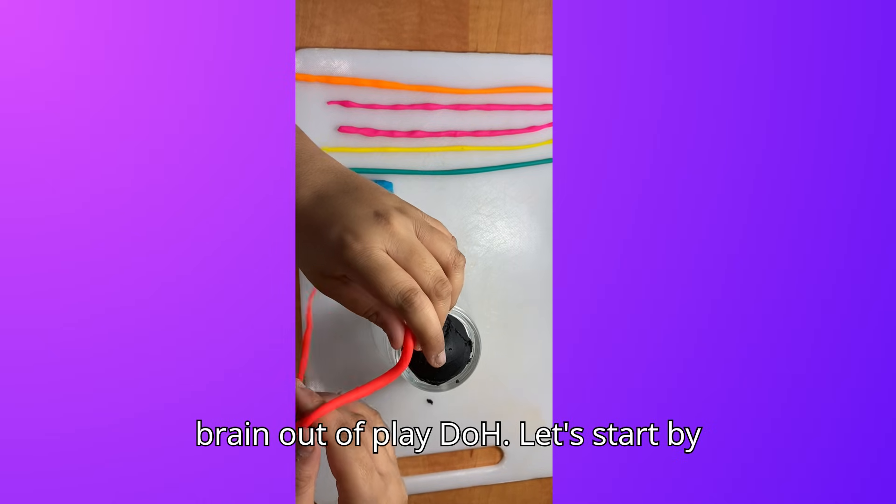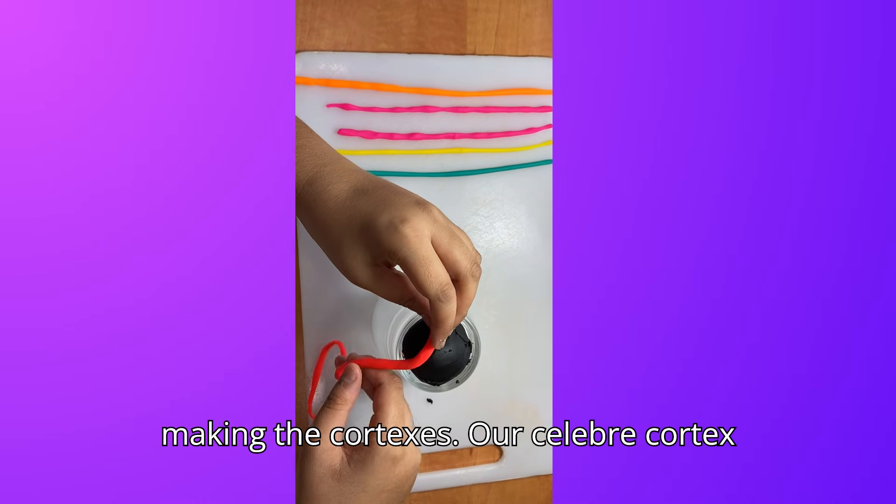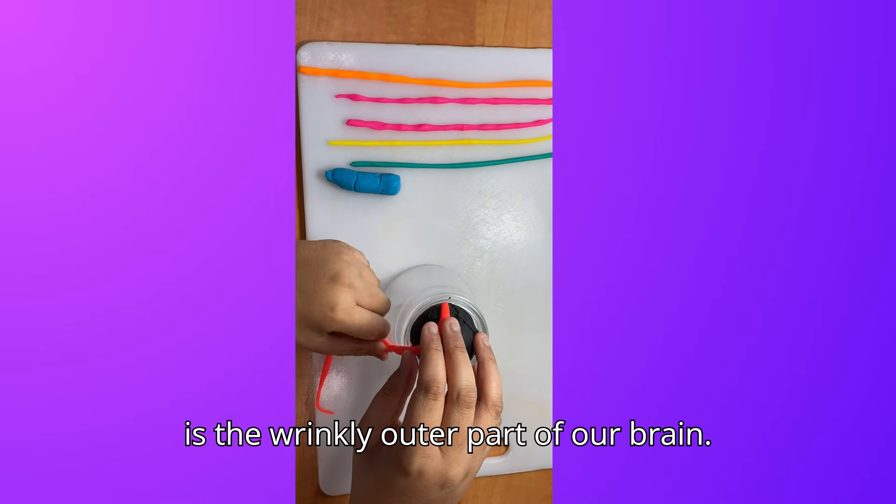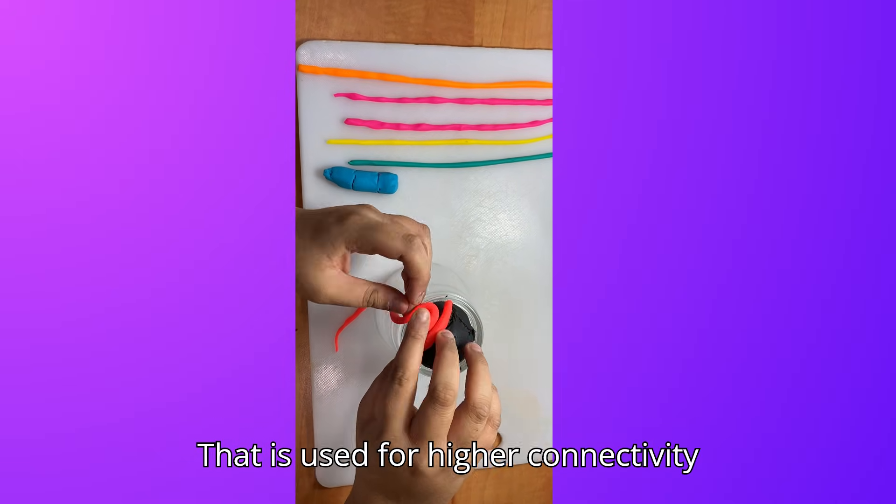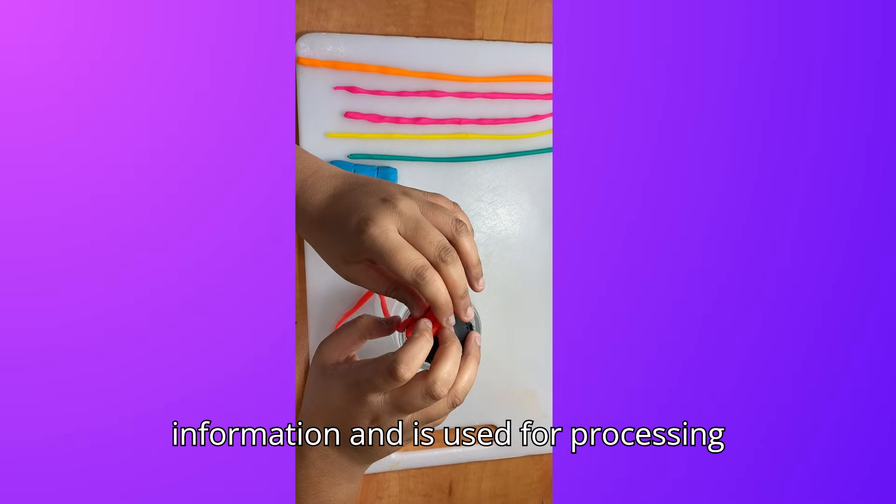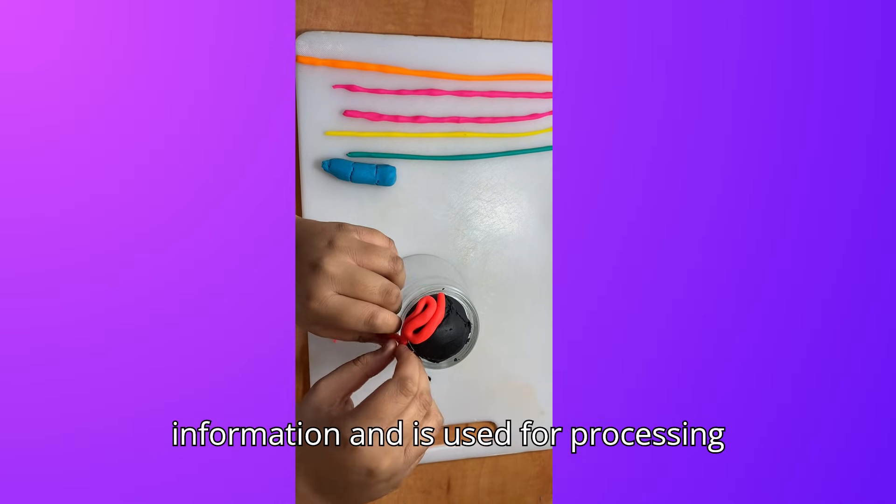Let's start by making the cortexes. Our cerebral cortex is the wrinkly outer part of our brain that is used for higher cognitive information and is used for processing sensory thoughts.